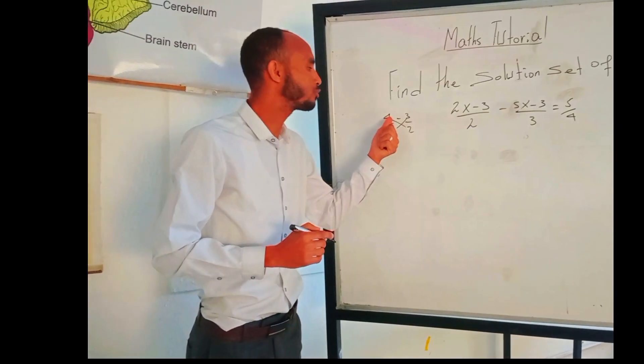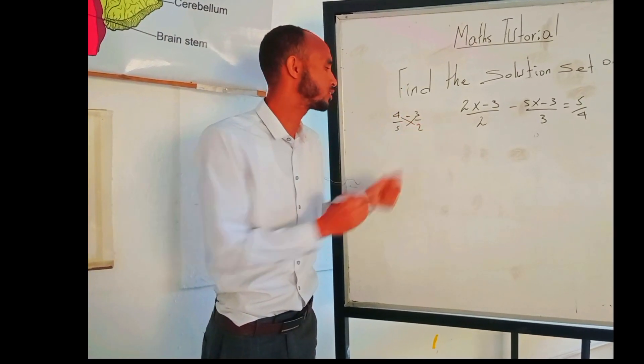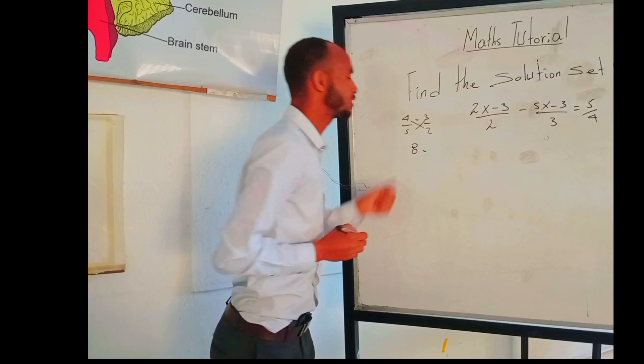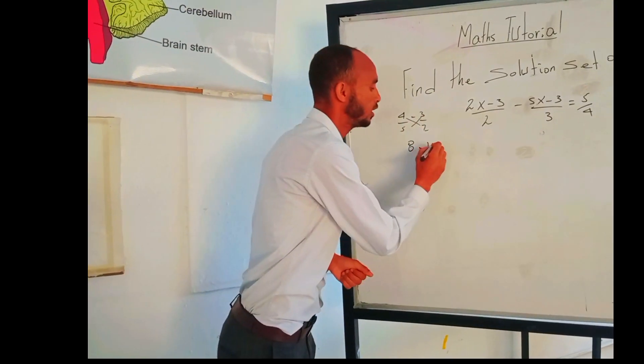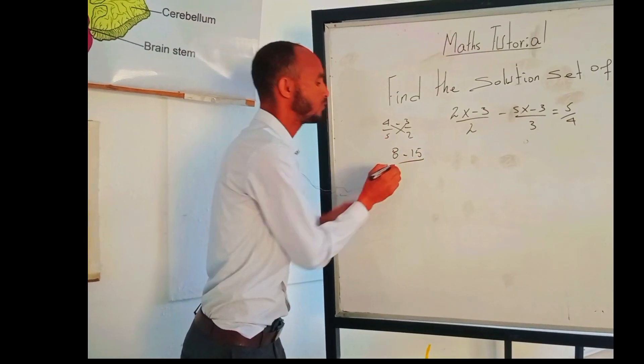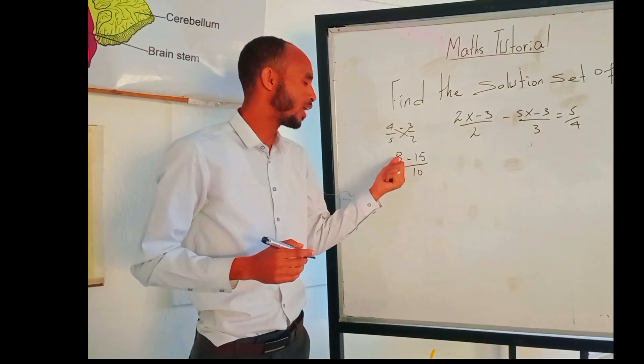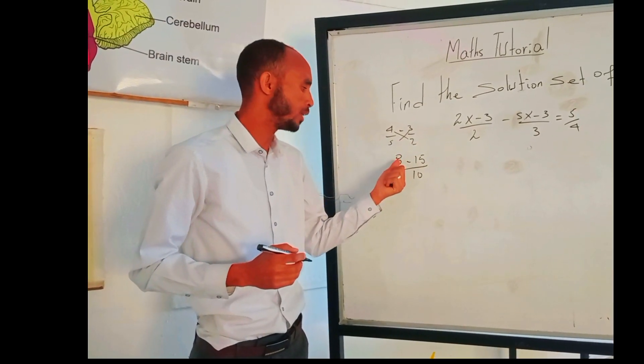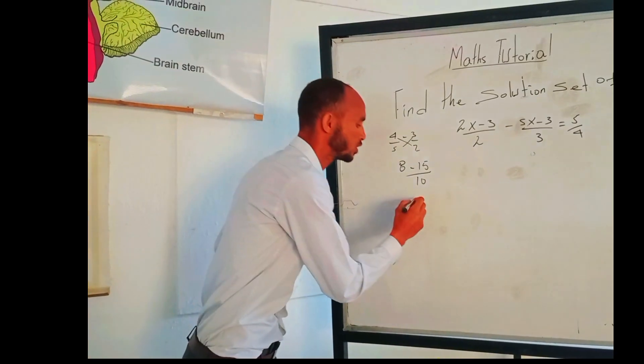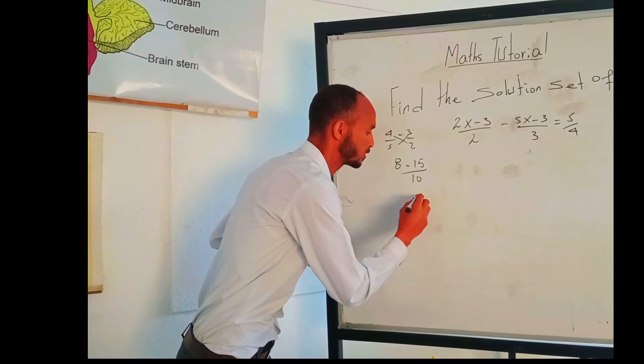Cross-product method means you have to multiply 4 by 2 is 8, minus 5 by 3 is 15, and then 5 times 2 is 10. Then the next step is what is this difference? 8 minus 15, that means negative 7.